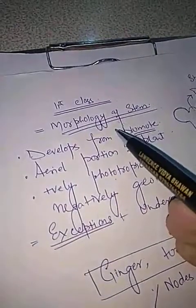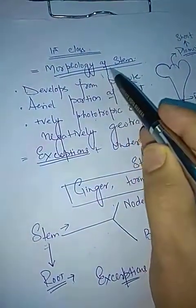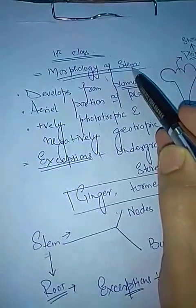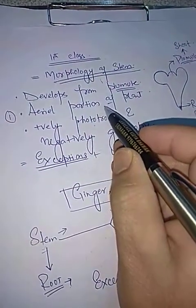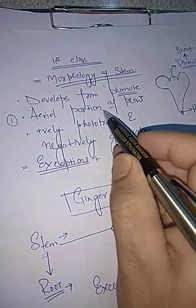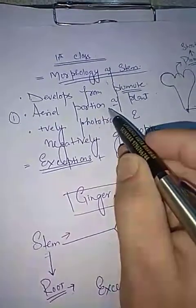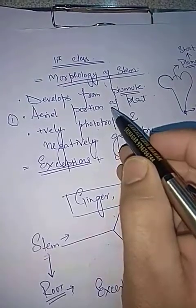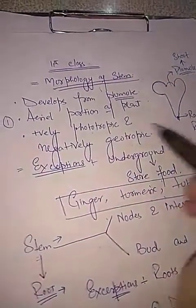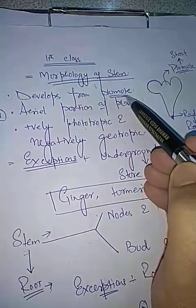Assalamu alaikum dear students. I will be discussing the morphology of stem. As you already know, in class we had finished the morphology of root, so now I will be discussing the morphology of stem. The first important point regarding stem is that stem is the aerial portion of the plant. Some students have confusion regarding the stem and shoot system. The main stem along with branches, leaves, flowers, and fruits — everything above the ground — is collectively called the shoot system. The stem usually develops from the plumule.